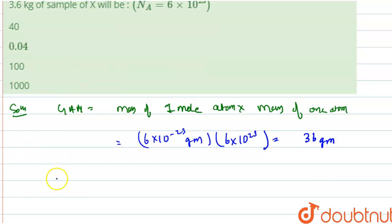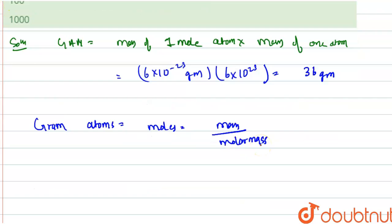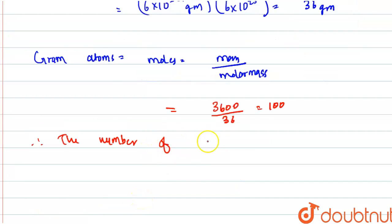Gram atoms, which is equal to moles, equals mass divided by molar mass. This is equal to 3.6 kg, which is 3600 grams, divided by 36, which equals 100. So the number of gram atoms in 3.6 kg is equal to 100.